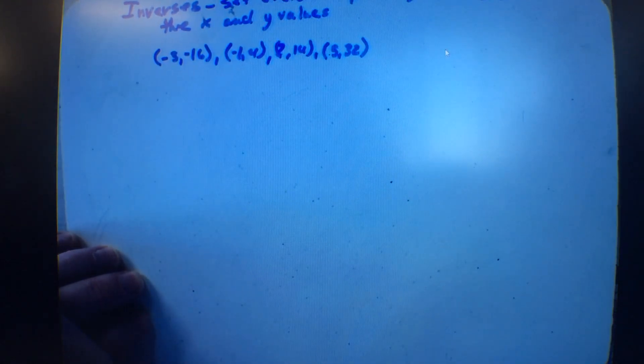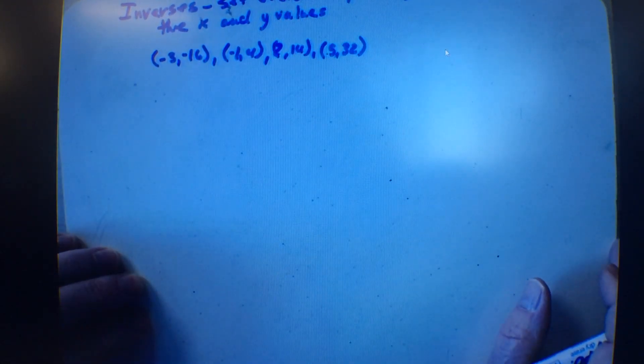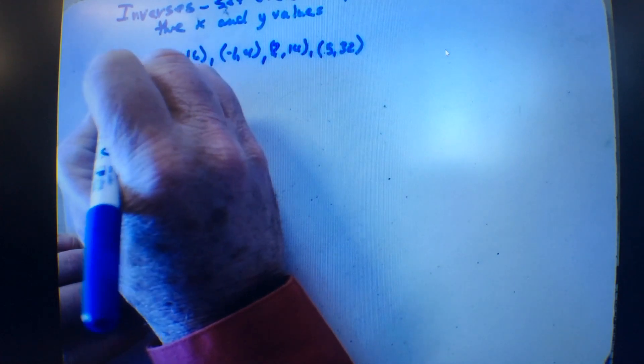Okay, this is the original relation. So it's negative 3 and negative 16, negative 1, 4, 2, 14, 5, 32. We'll call this f of x.